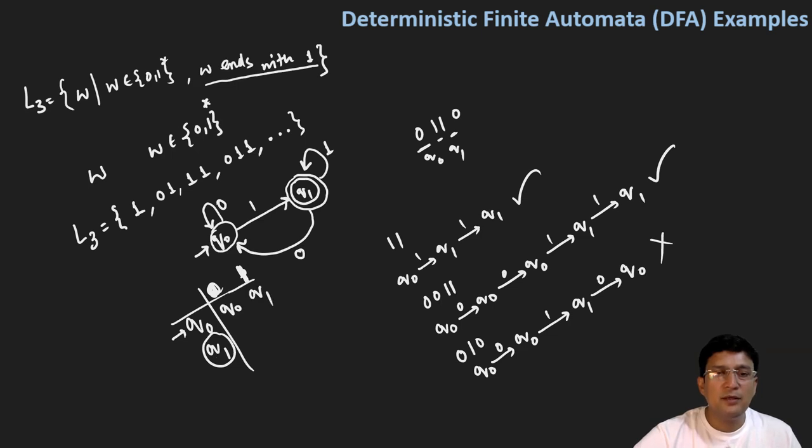In q1 on getting zero we move to q0 and on getting one we remain at q1. So we have shown all the transitions with all the alphabet or all the symbols in the alphabet set.